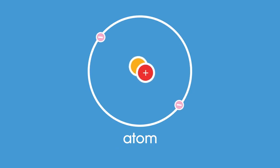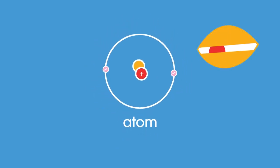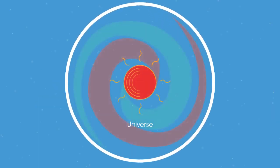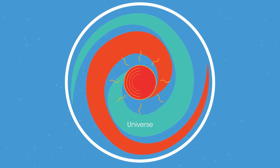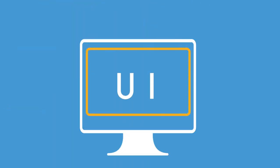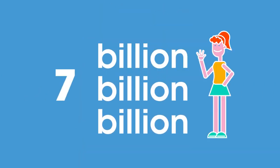Atoms are tiny particles that are so small they're not possible to see with the naked eye — they're only barely possible to make out with the most powerful microscopes. Everything that exists in our universe is made up of atoms, including you, I, and the device you're watching this on. In fact, there are about seven billion billion billion atoms in your body alone.